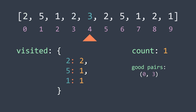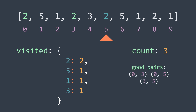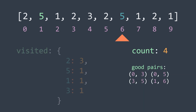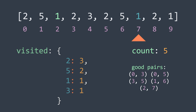We continue: value 3, not seen before, put it in the hash map initialized to 1. Next, value 2 again — from the hash map we know we've seen it twice before, so we add 2 to the counter and increment. Next, value 5 — already saw it once, add 1 to the counter and increment. Next, value 1 — seen once before, add 1 and increment.